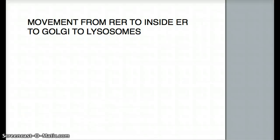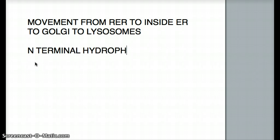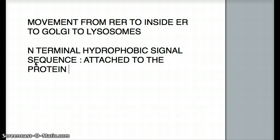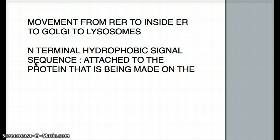Now that we recognize rough endoplasmic reticulum, let's talk about the movement. When a protein is being made on the cytoplasmic side of a ribosome on the rough ER, it's going to have something called an N-terminal hydrophobic signal sequence. This is a term that needs to be memorized — N-terminal hydrophobic signal sequence — and it's going to be attached to the protein that is being made on the ribosome of the rough ER.